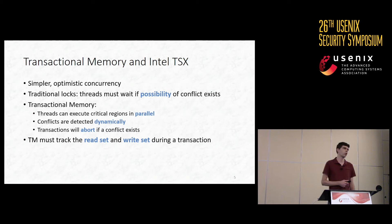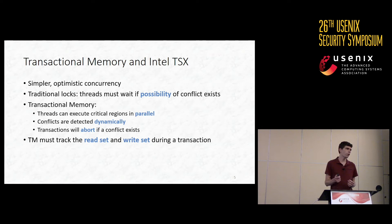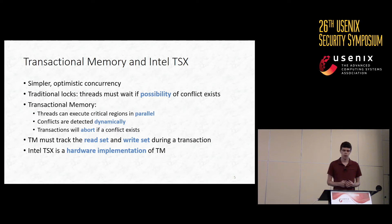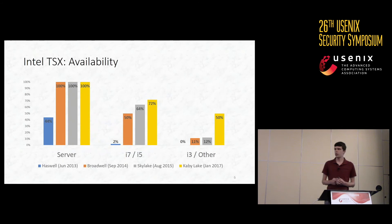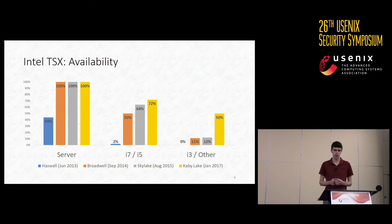In order to determine when dynamic conflicts exist, transactional memory systems have to keep track of the read set and write set of ongoing transactions. The read set is the set of data that has been read by the transaction, and the write set is the set of data that has been written by the transaction. This tracking can be done in software or hardware, but Intel has done it in hardware in recent CPUs, and the result is called Intel TSX, or Intel Transactional Synchronization Extensions. Despite being relatively new, Intel TSX is already widely available. Since 2014, when Broadwell was released, 100% of Intel server CPUs and a majority of Intel Core i7 and Core i5 CPUs support TSX, meaning our attack is already widely applicable against both server-grade and consumer-grade platforms.